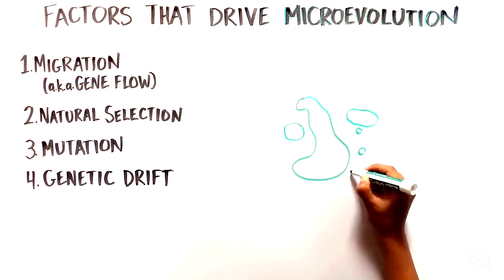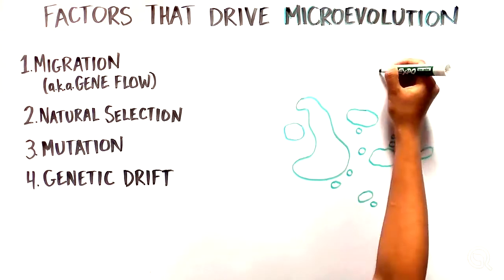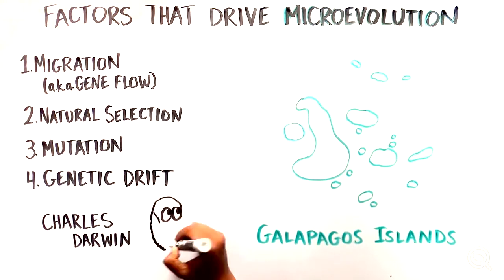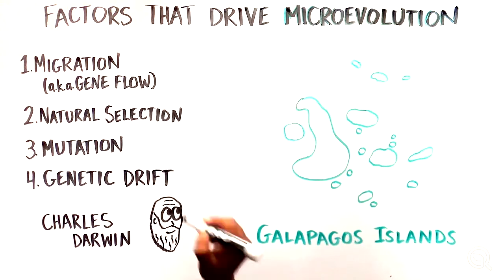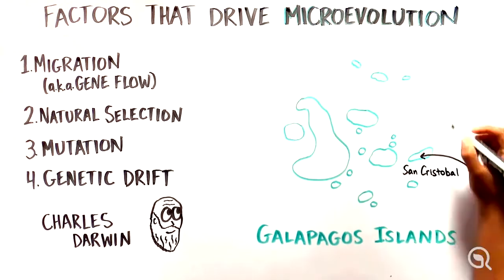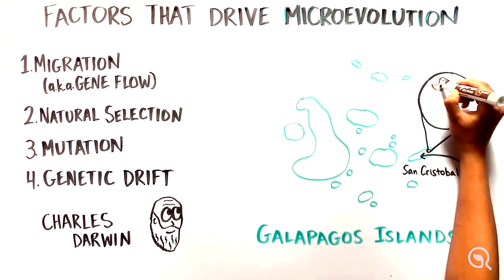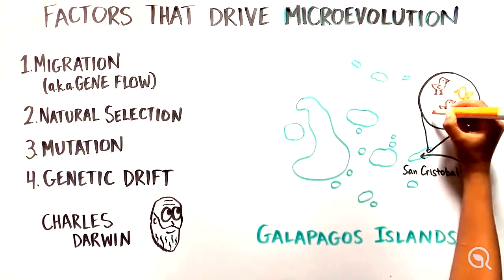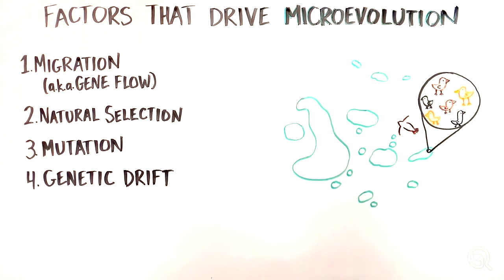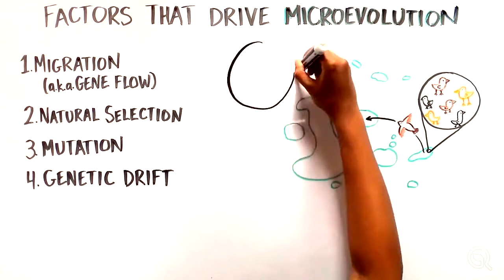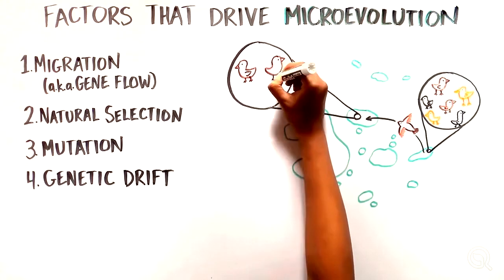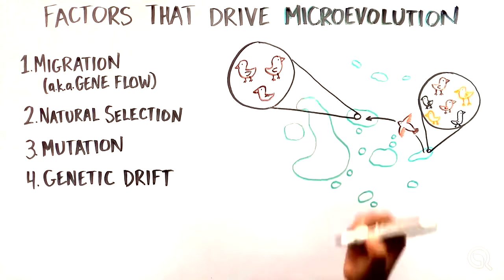Let's use the example of how evolution shaped the finches on the Galapagos Islands, which was studied by Charles Darwin back in the mid-1800s. A single population of finches originally landed on the islands and started living and breeding there. Imagine then if a fraction of those birds flew over to a different nearby island. This migration event led to different frequencies of certain genes on the different islands, which can then persist if the birds on each island breed with each other.